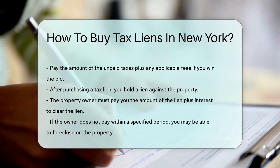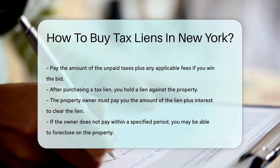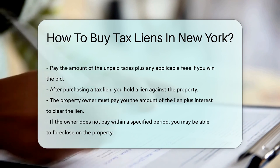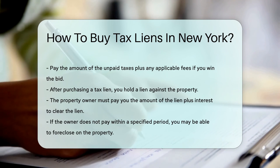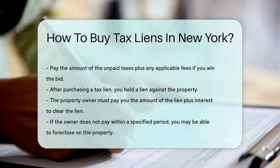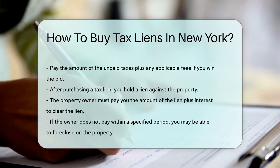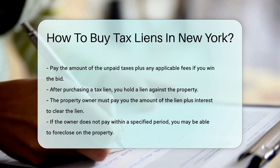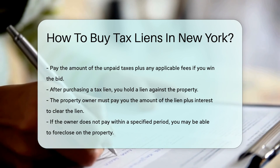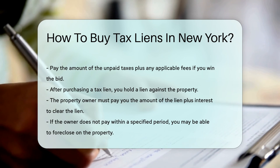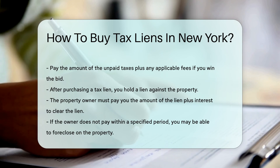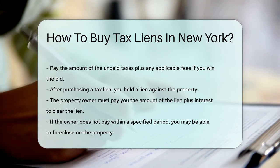After purchasing a tax lien, you hold a lien against the property. The property owner must pay you the amount of the lien plus interest to clear the lien. If the owner does not pay within a specified period, you may be able to foreclose on the property.